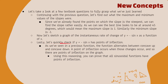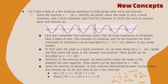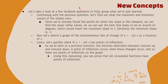Lastly, the question asks us to check whether y = −sin(x) has points of inflection. As we can see, the graph goes from concave up to concave down, and at those transitions we do reach a point where the tangent line is steepest — confirming there are points of inflection. Using this reasoning, we can prove that all sinusoidal functions have points of inflection — even tangent, which goes from concave down to concave up, giving a point of inflection right there.